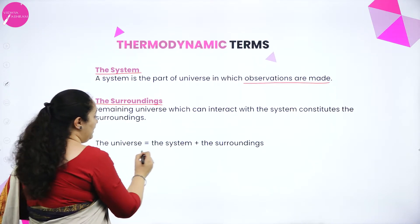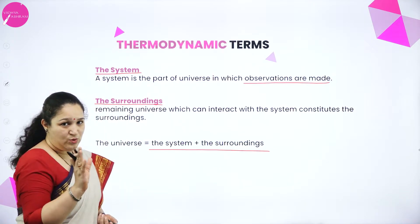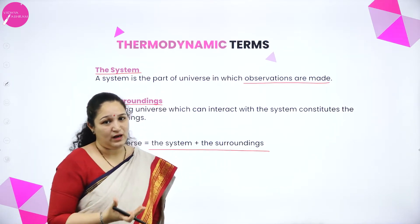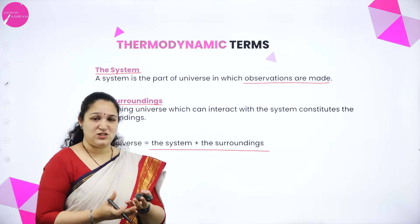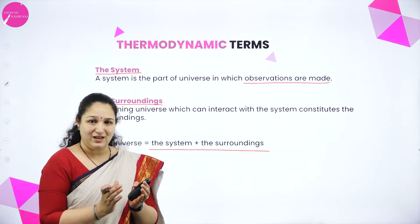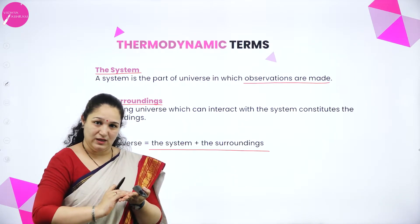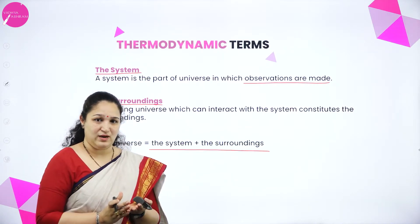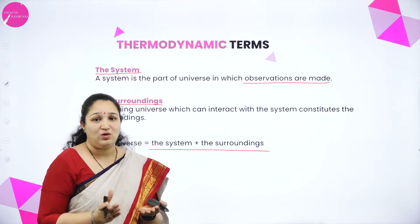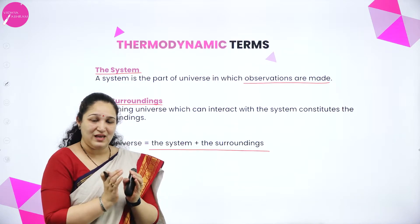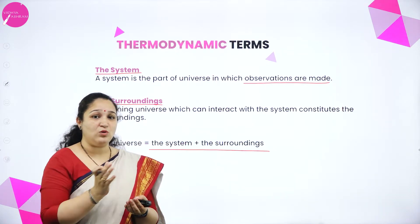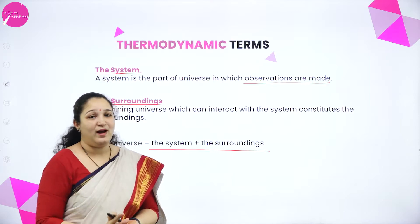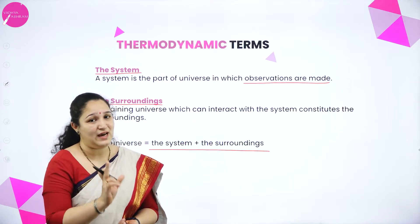The universe is nothing but the system plus the surrounding. To understand better — if you take a coffee cup with hot coffee, and you are going to study about the coffee within that cup, that is your system. Whatever is around it — the air around it — becomes the surrounding. So the system is where the observations are made, and the surrounding is the space of the universe which can interact with the system.